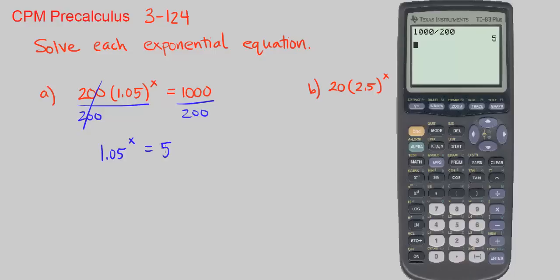Now we know that if we apply the log of any base to both sides, we're going to be able to bring down the exponent eventually. So let's go ahead and do that. Log of 1.05 to the power of x equals log of 5. Now you can bring down the exponent. This becomes x times log of 1.05 equals log of 5.